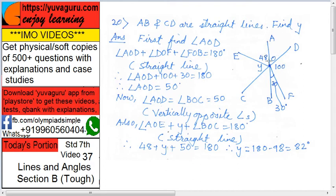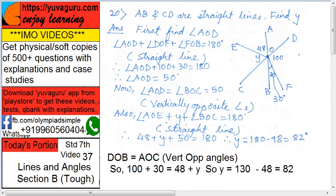Angle AOE equals 48, angle DOF equals 100, angle BOF equals 30, and we have to find y. There are two ways of solving it. First, I will show you this in black. Very simple. AB and CD are intersecting each other.